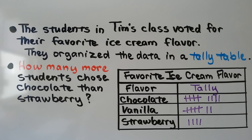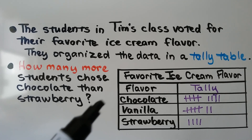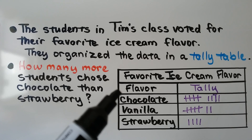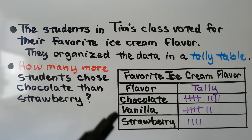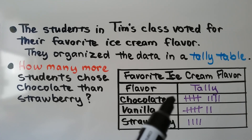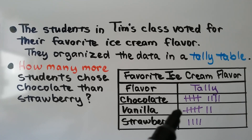The students in Tim's class voted for their favorite ice cream flavor. They organized the data in a tally table. How many more students chose chocolate than strawberry? We look at our tally table, titled Favorite Ice Cream Flavor. The flavors are chocolate, vanilla, and strawberry, and we see how many tally marks are for each flavor. Chocolate has nine, vanilla has seven, and strawberry has four.